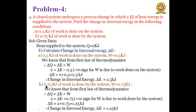Second condition: 0.75 kJ of work is done on the system, so W = -0.75 kJ. From the first law: ΔQ = ΔE + W, so 2 = ΔE + (-0.75). Therefore, ΔE = 2 - 0.75 = 1.25 kJ. Change in internal energy is 1.25 kJ.